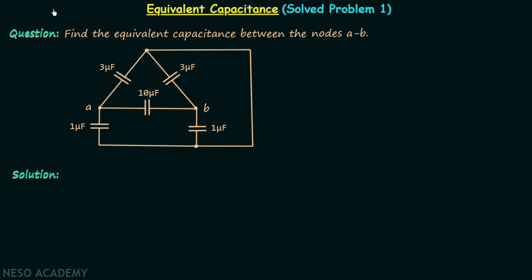We have solved many problems on calculation of equivalent resistance and now we are going to solve problem number one on calculation of equivalent capacitance. In this first problem we are required to find the equivalent capacitance between the nodes A and B. I will suggest you to pause the video for a while and analyze the given network.